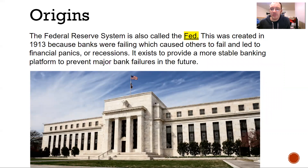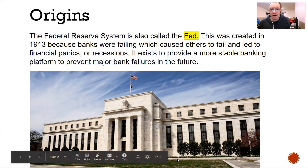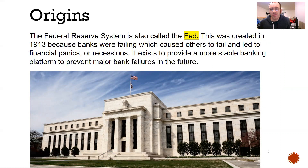We did have situations where tons of banks would fail and all of a sudden you're out of money — it's gone, these banks don't have it anymore. And so in 1913 we got smart and said maybe we should do something so our banks stop failing. That was the goal of the Federal Reserve.